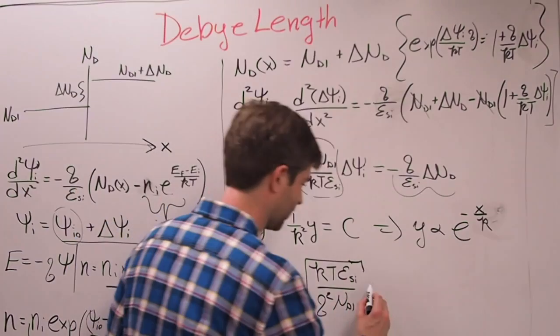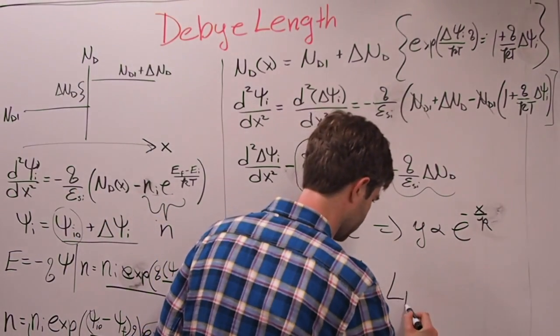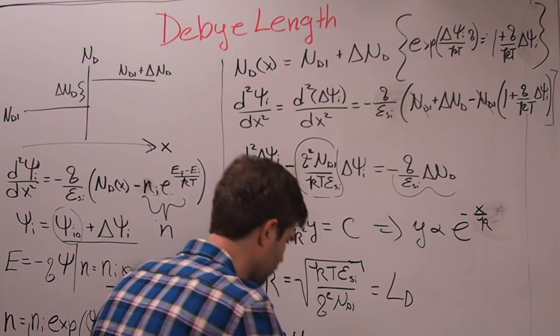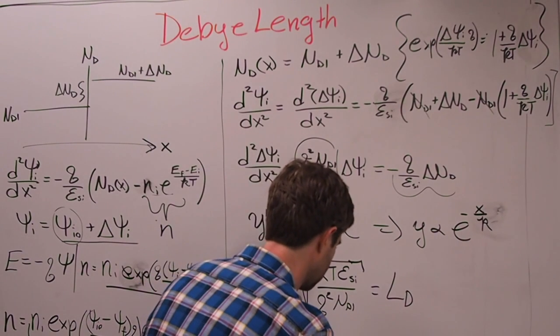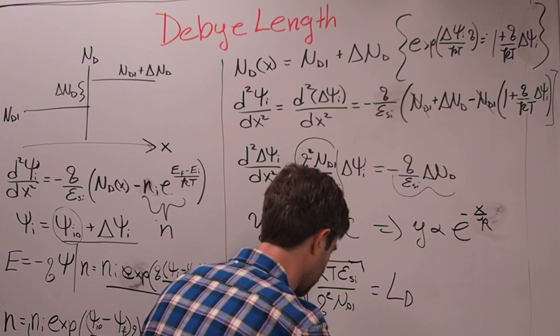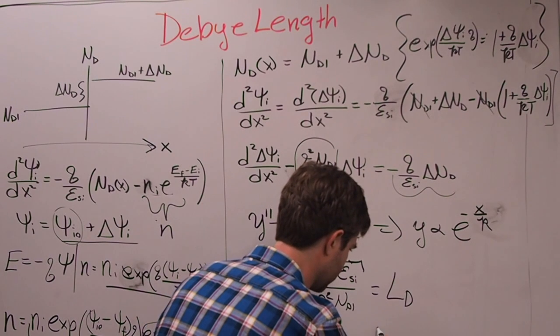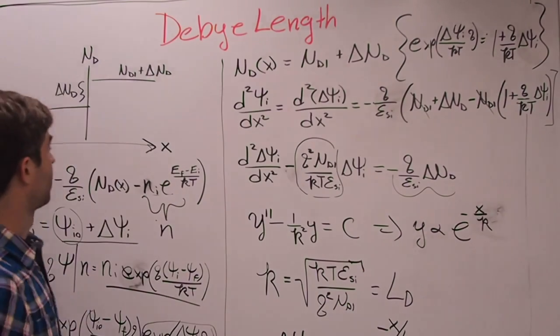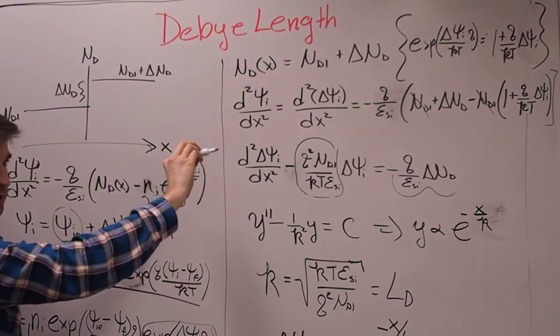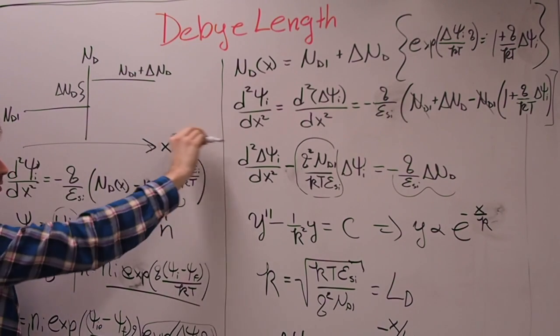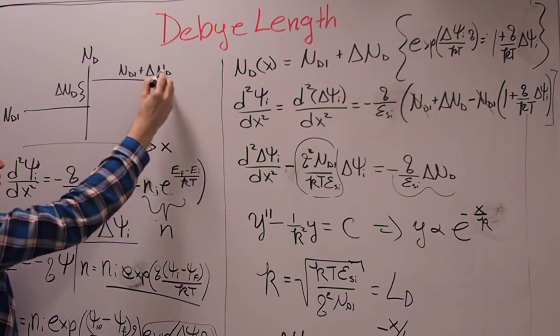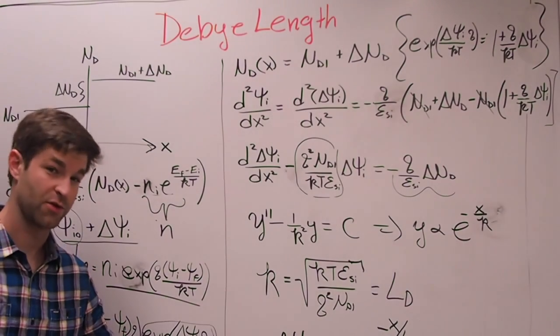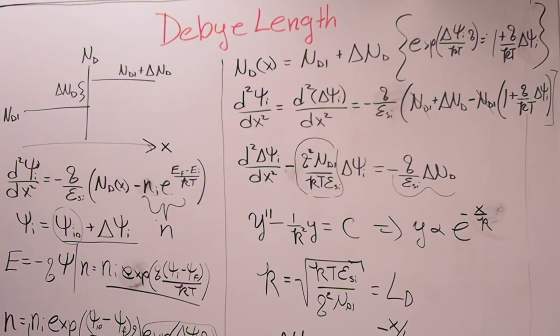So this we call our Debye length, because delta phi I is proportional to exponential to the negative X over LD. So as X increases and goes into the bulk of this new doping, then our potential goes to zero. Or our change in potential, our change in potential goes to zero.